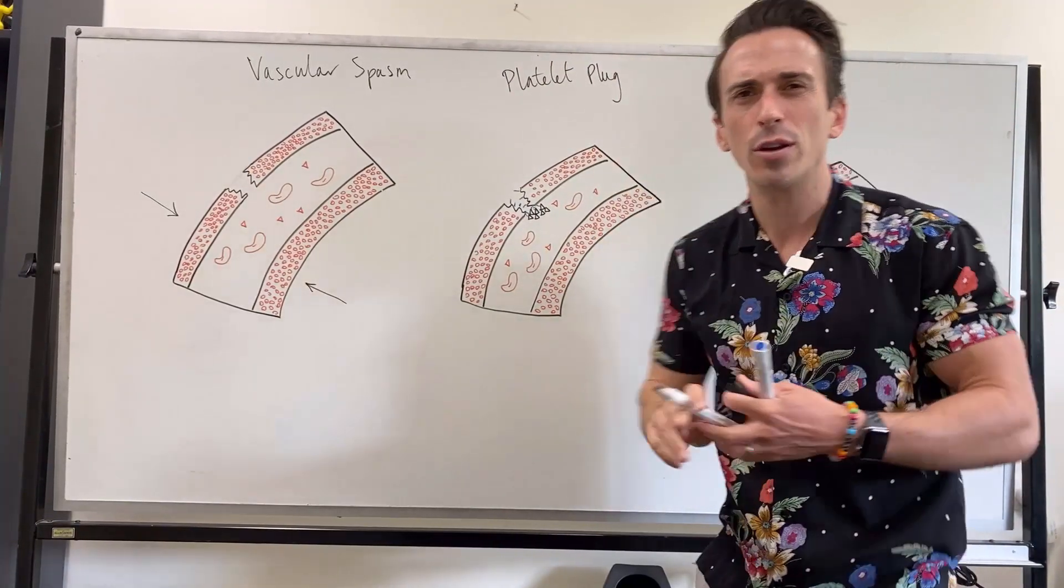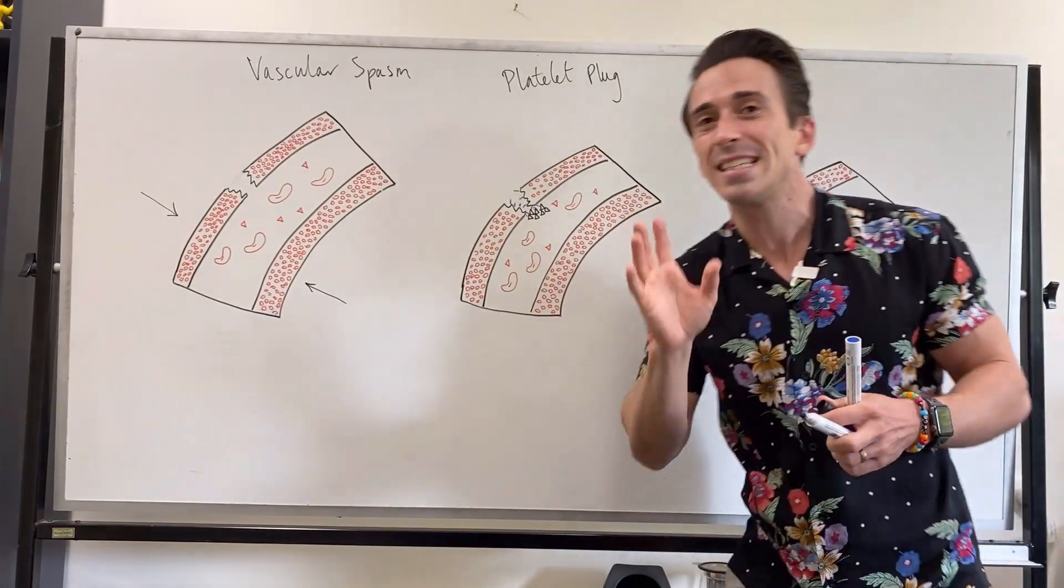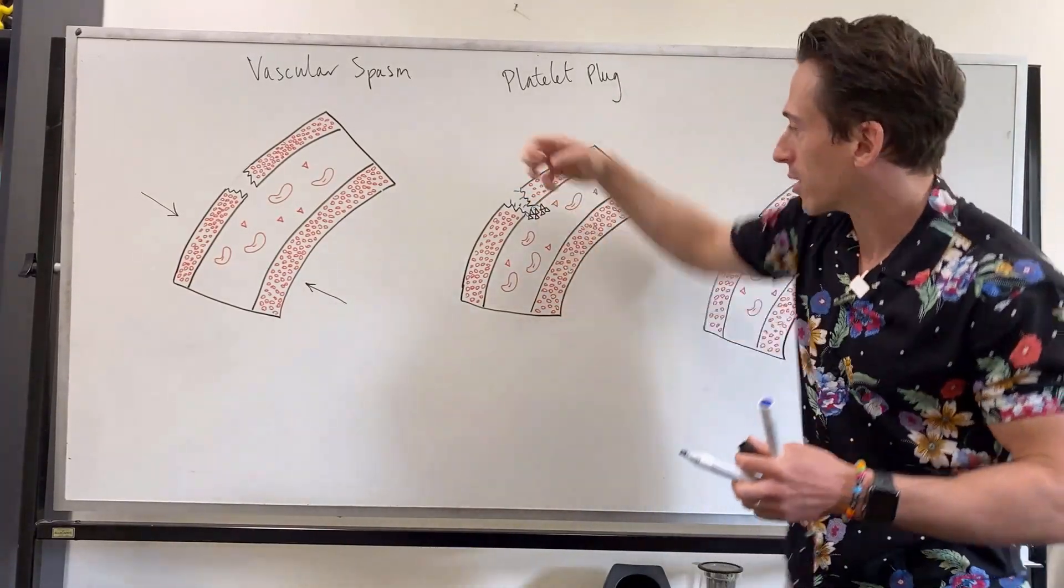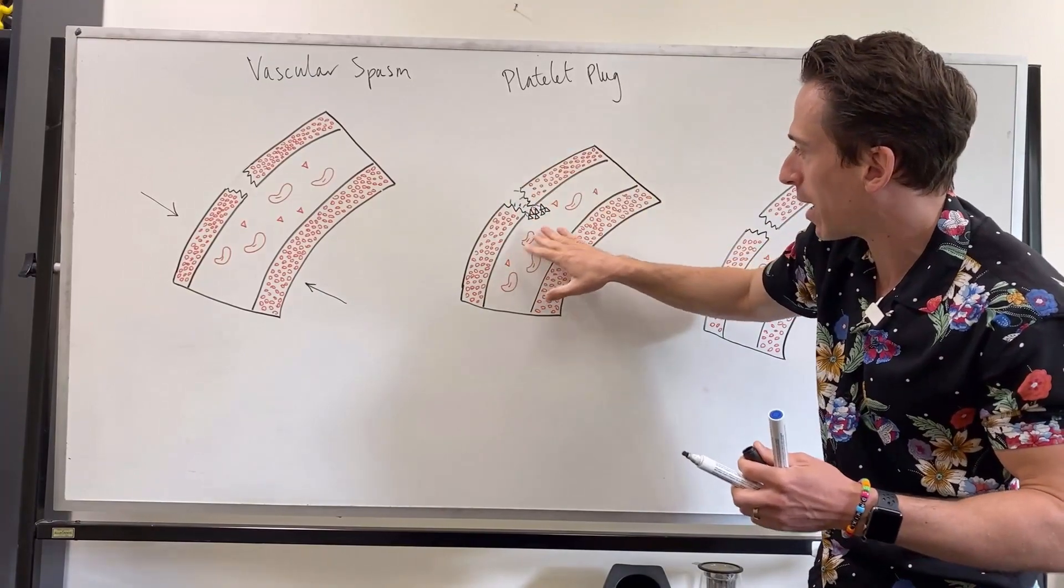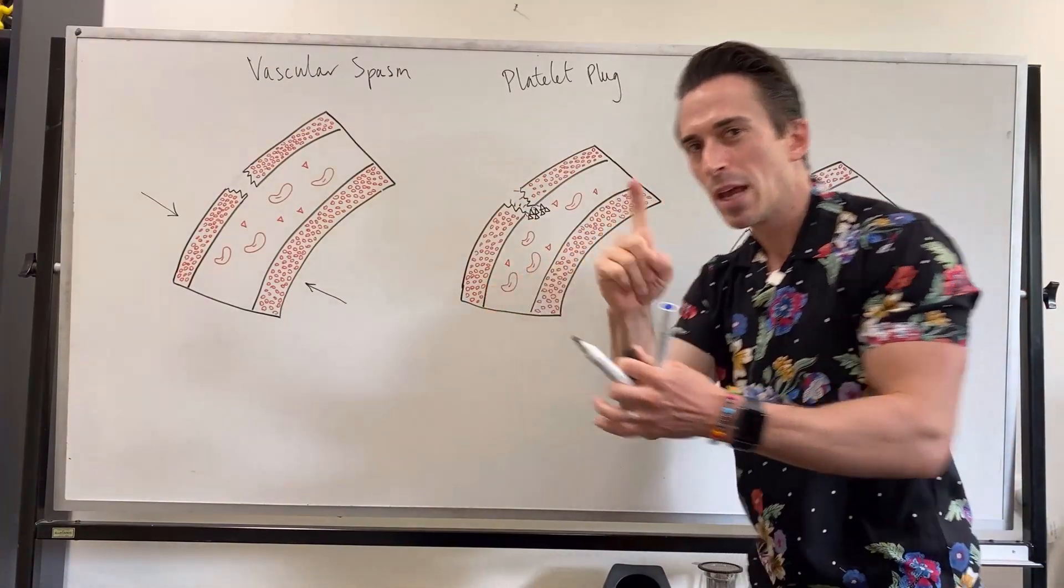This happens within 30 to 60 seconds, right, of this damage to the blood vessel wall. So the collagen that's been exposed, platelets coming past, they see it, they stick to it. Now here's what happens.